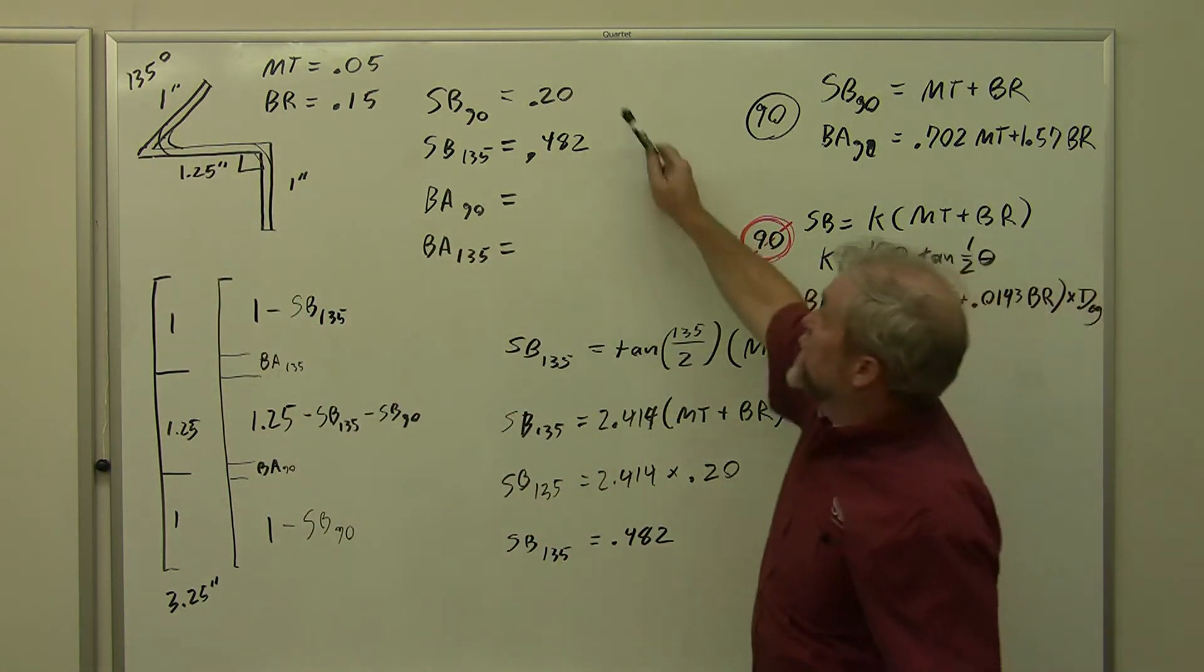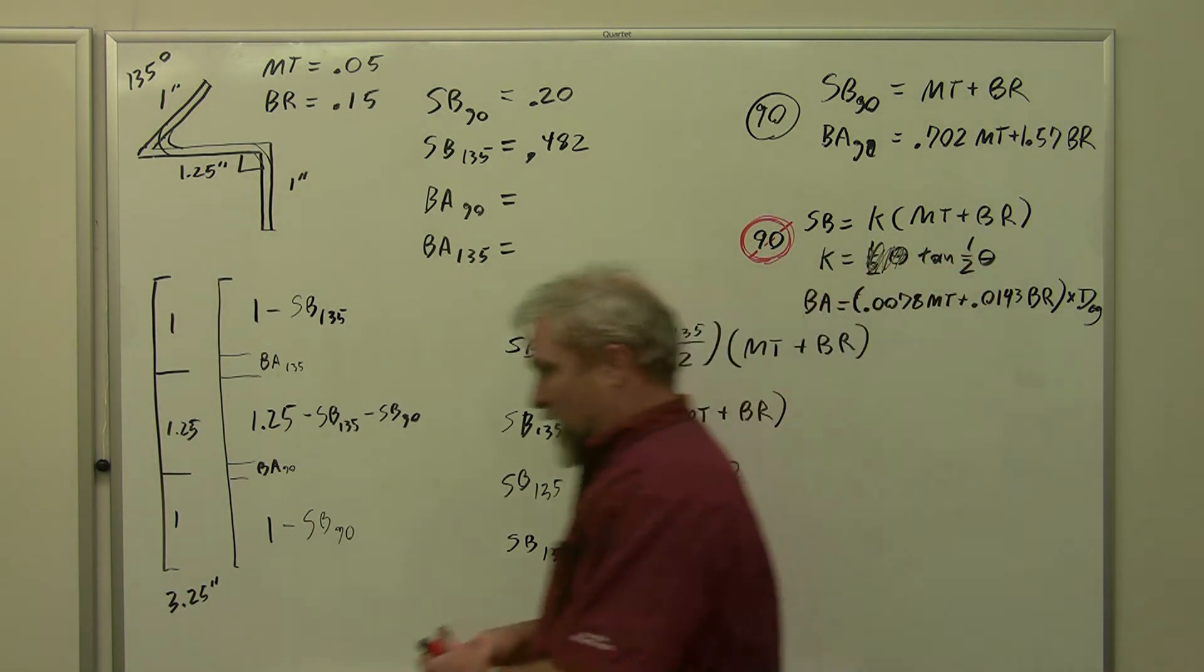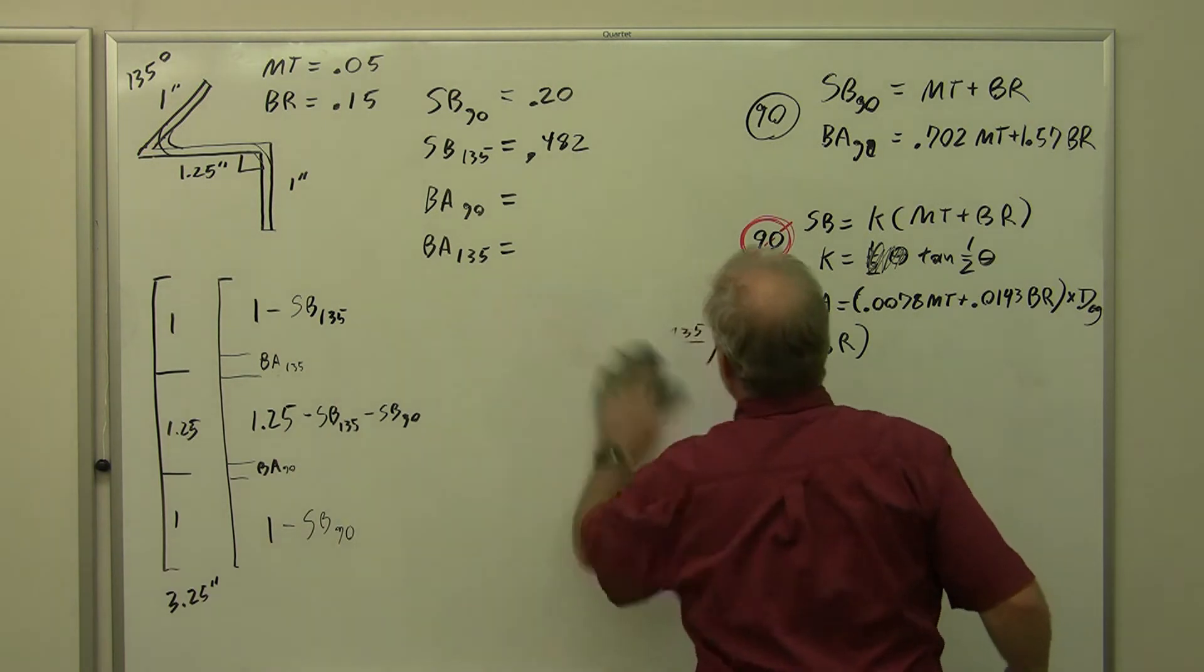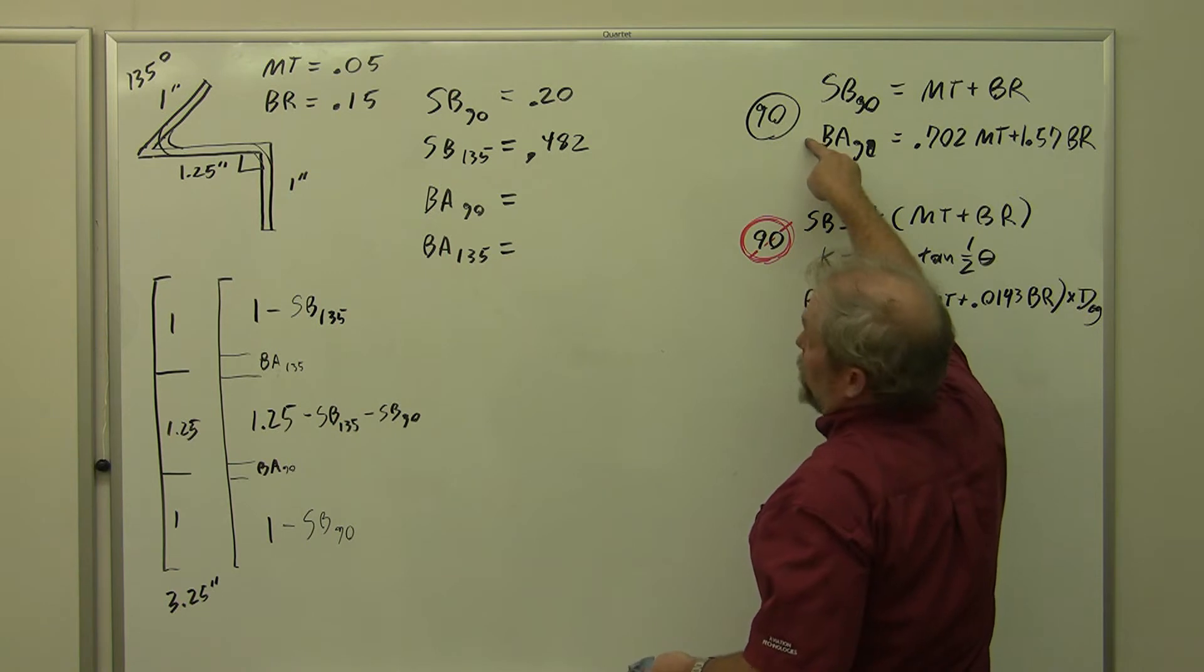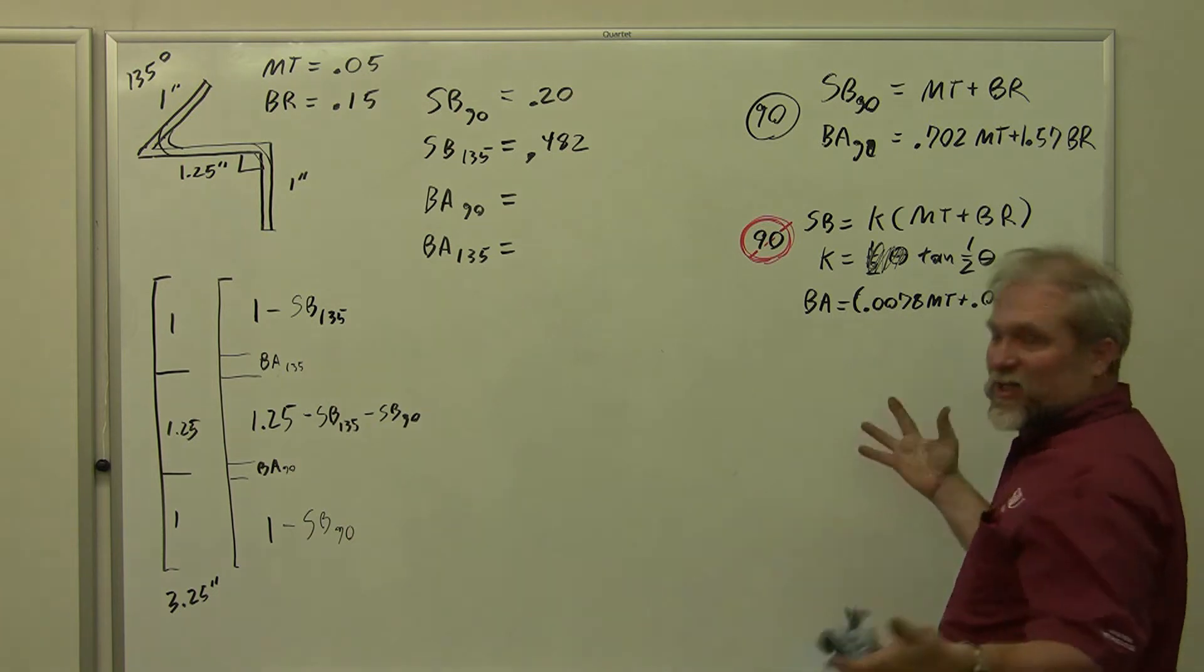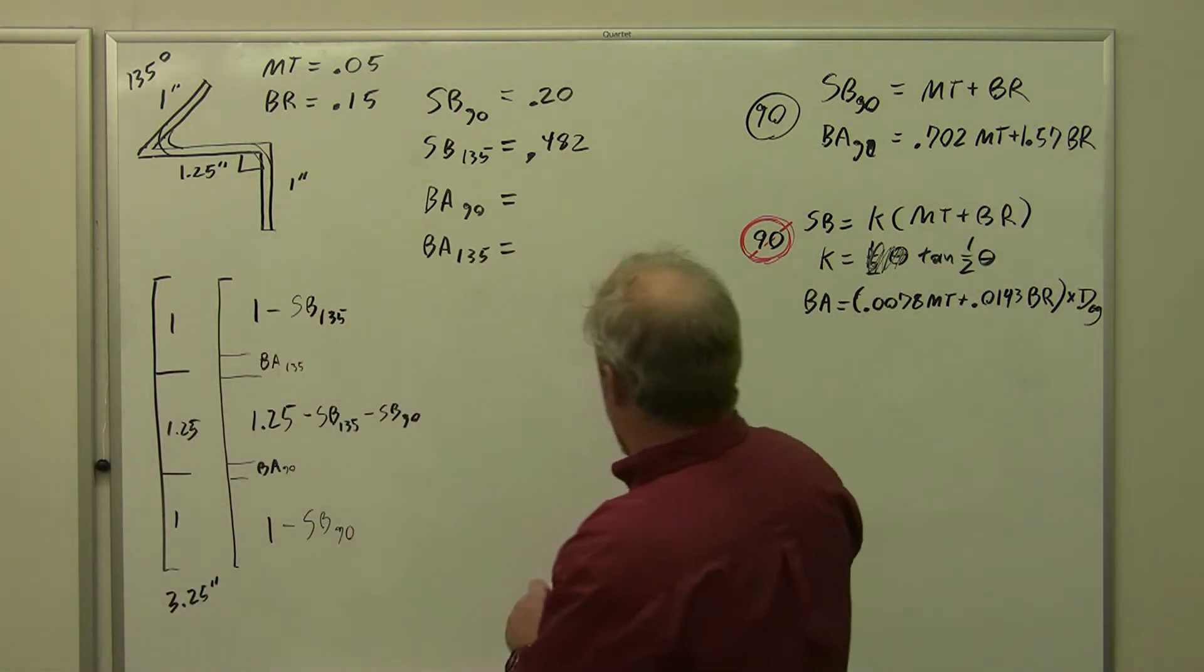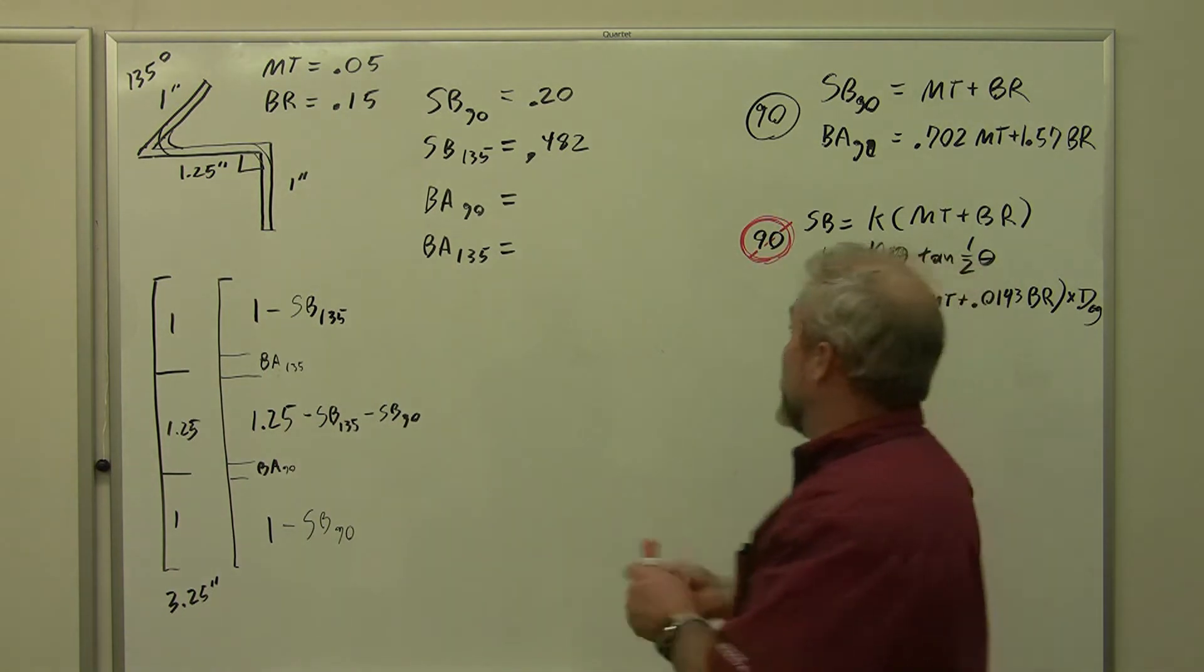So we have our first numbers. We need our bend allowance numbers now. I'm going to show you the way that I like to calculate these when I've got multiple pieces. I use this formula and I calculate this part and multiply it once by 90 and once by 135. That just makes the math come out a little easier. Now, learning from my past experience, we're going to begin down here where I can put it all on one line.